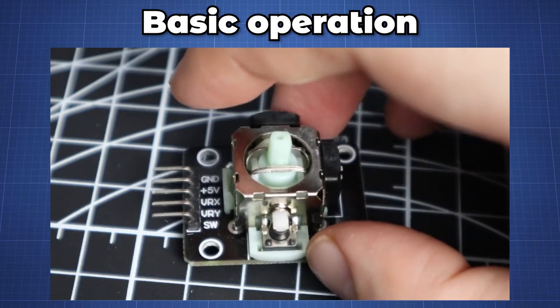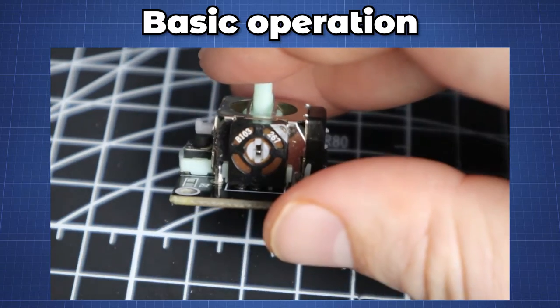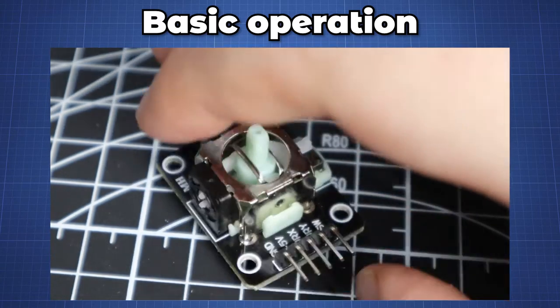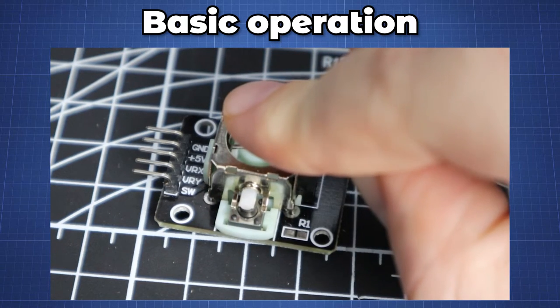An analog thumbstick joystick is effectively three devices in one: a potentiometer for the x-axis, a potentiometer for the y-axis, and a digital momentary button when you press down.